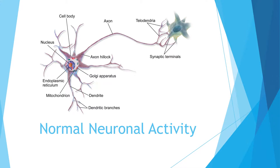Before we discuss what goes wrong, I thought it'd be wise to revise what goes right, so I'll go over how a neuron normally works. This is an illustration of a multipolar neuron with major anatomy highlighted. The cell body, also known as the soma, contains the nucleus surrounded by rough endoplasmic reticulum, mitochondria, and Golgi apparatus. The rough endoplasmic reticulum plays an important role in protein synthesis, which can be used for intracellular neurotransmitter production.